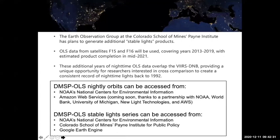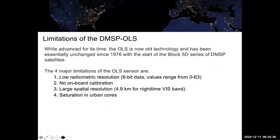You can get DMSP nightly orbits at NCEI and soon through Amazon Web Services — a partnership between NOAA, World Bank, University of Michigan, New Light Technologies, and AWS. The stable light series are at NCEI, also hosted at Colorado School of Mines, and Google Earth Engine has a copy that we will use later today in the tutorials.